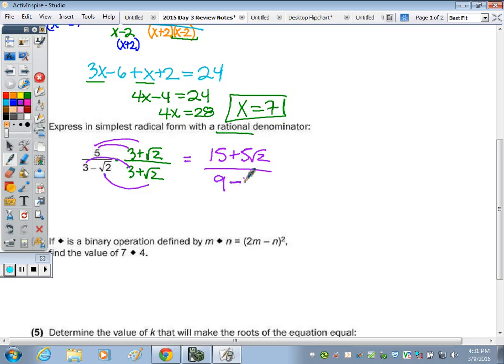So the final answer is 15 plus 5 radical 2 over 7, as we can't divide 15 and 5 by 7.